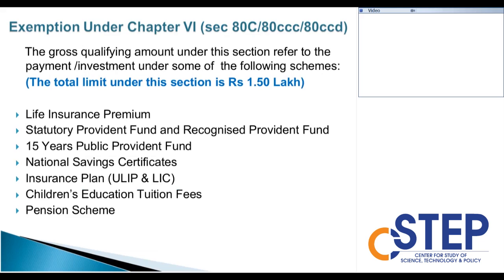Now we will go to the exemptions under Chapter 6A. It contains sections 80C, 80CCC, and 80CCB. The gross qualifying amount under this section refers to payment or investment under the following schemes, with a total limit of 1,50,000. It includes life insurance premium, statutory provident fund, recognized provident fund, public provident fund (which has a 15-year blocking period), voluntary provident fund, national savings certificates, ULIP, children's education tuition fee, and pension schemes by government or private banking. Altogether, 1,50,000 is the maximum investment for tax exemption under these sections.